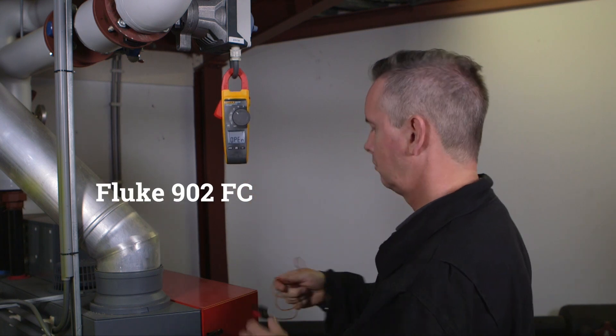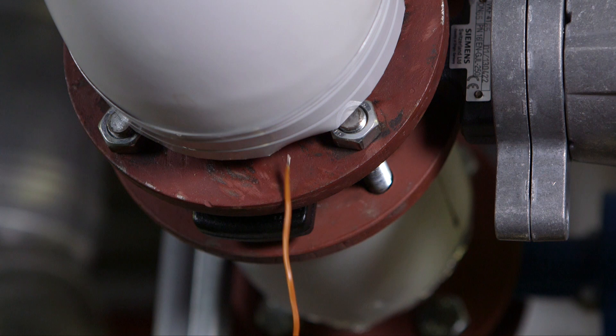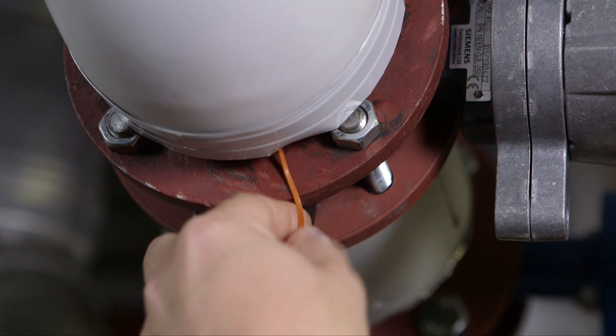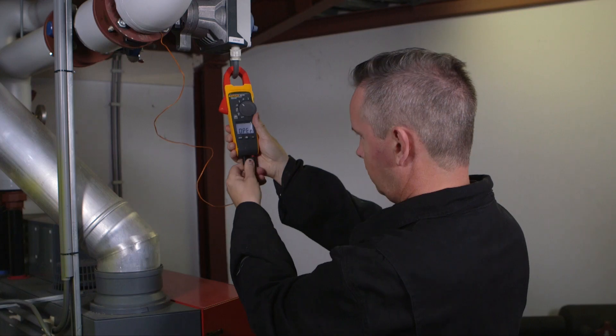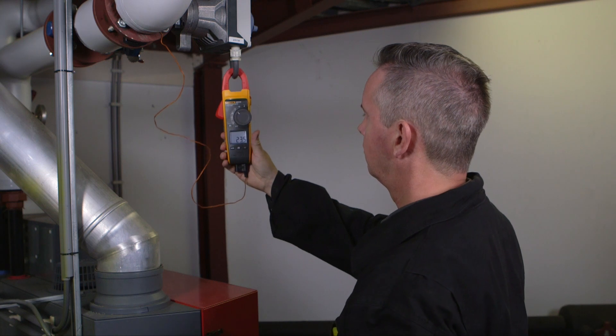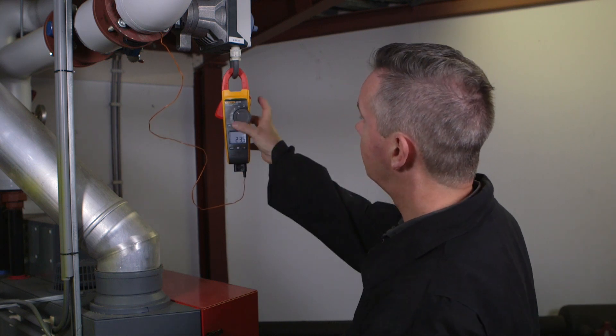The rugged dual rated Fluke 902 FC clamp meter performs the essential measurements of HVAC systems like DC microamps, resistance, AC current, AC DC voltage, capacitance and contact temperature, eliminating the need to carry multiple tools.